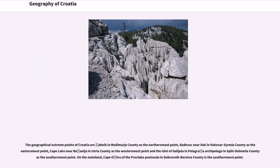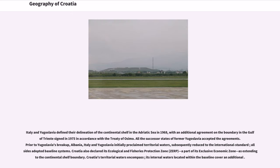On the mainland, Cape Ostra of the Prevlaka Peninsula in Dubrovnik-Neretva County is the southernmost point. Italy and Yugoslavia defined their delineation of the continental shelf in the Adriatic Sea in 1968, with an additional agreement on the boundary in the Gulf of Trieste signed in 1975 in accordance with the Treaty of Osimo. All successor states of former Yugoslavia accepted the agreement. Croatia also declared its Ecological and Fisheries Protection Zone (ZERP), as part of its exclusive economic zone, extending to the continental shelf boundary.